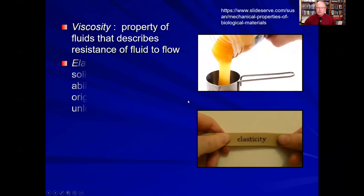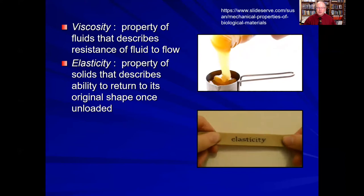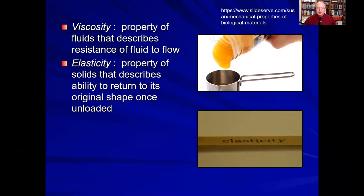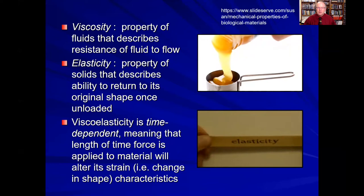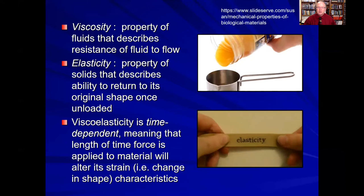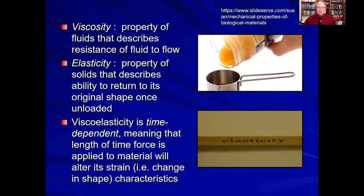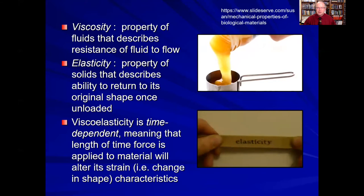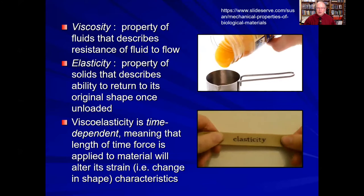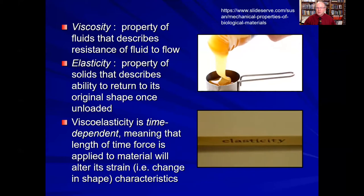Elasticity, on the other hand, is a property of solids that ascribes its ability to return back to its original shape once it's been loaded and then unloaded. This elasticity is something we're all familiar with in many types of objects such as rubber bands, metal rods that will bend and return to their shape, or a beam of wood that would tend to bend and then return to its original shape. But when we say something is viscoelastic, it means that it has a time-dependent characteristic — the length of time the force is applied to the material will change the strain or deformation of that material over time.